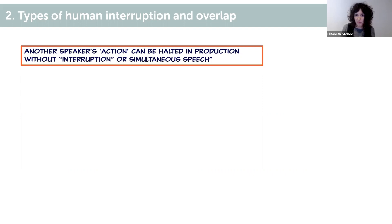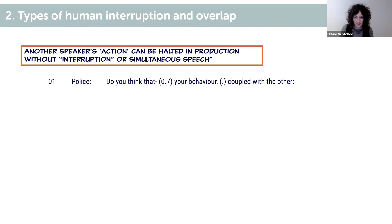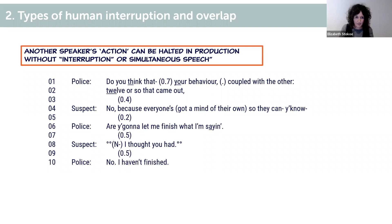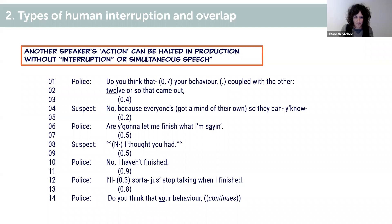The police officer asks 'do you think that your behaviour, coupled with the other 12 or so that came out—' and the suspect says 'no, I've never got a mind of the room' then asks 'are you going to let me finish what I'm saying?' The suspect halts the police officer's attempt to build that first question but doesn't actually talk over her. To get back on track, the police officer restarts the question by recycling what she'd originally tried to build at line one.